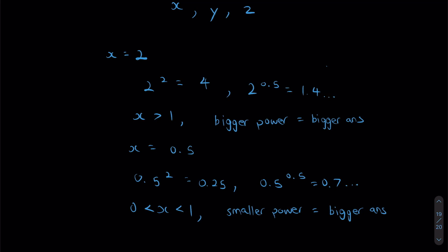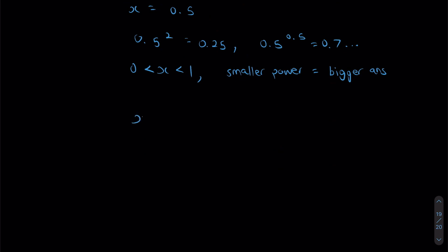So let's look at the three scenarios now. I have x. I have y, which is equal to x to the power of x. And I have z, which is x to the power of y. Since I know that x is between 0 and 1, I know that when I have a smaller power, I'm going to have a bigger answer. For the simplicity of this question, let's just say x is equal to 0.5.